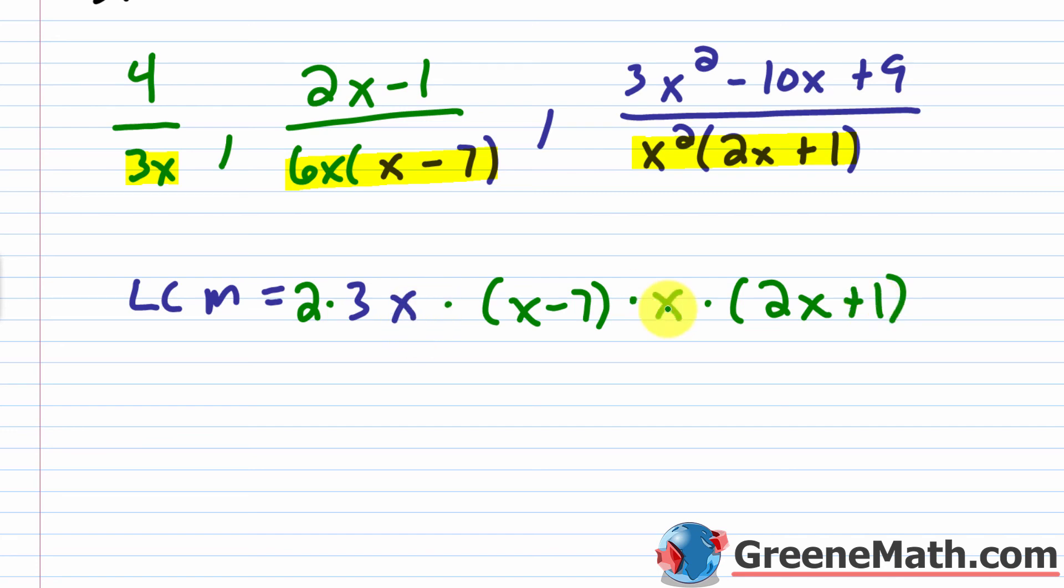So that's why we only have x squared here instead of putting an x in and an x again, and an x squared. Some people put basically x to the fourth power in there when you only need x squared. So from here, I can just go through and multiply everything and say that my LCM of the denominators, which again is called the LCD, is going to be 2 times 3, which is 6, times x times x, which is x squared, times this quantity x minus 7, and then times this quantity, which is 2x plus 1. So that's how we get the LCD of the denominators for this problem.